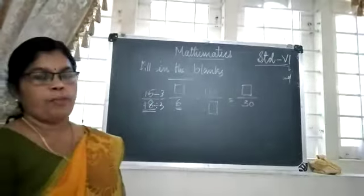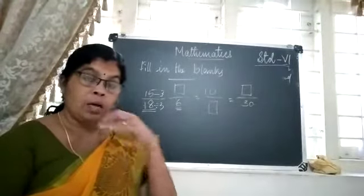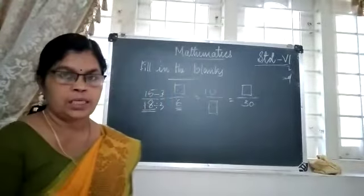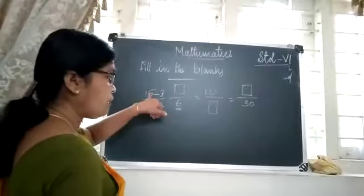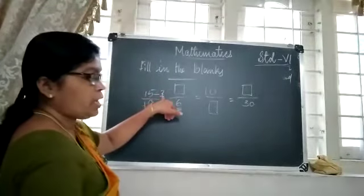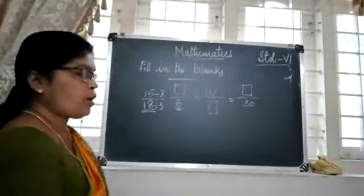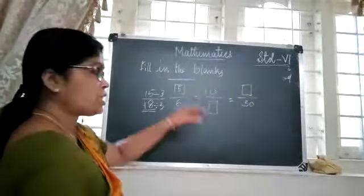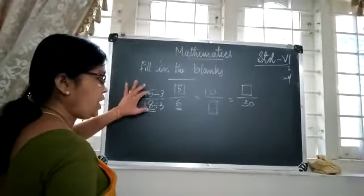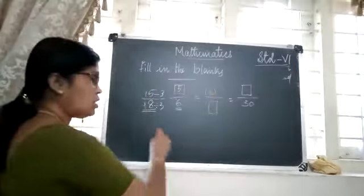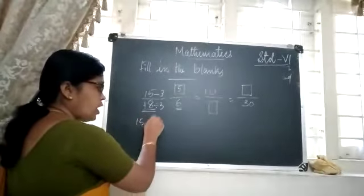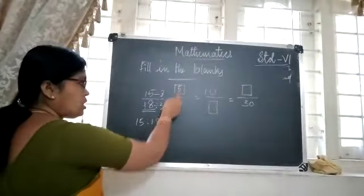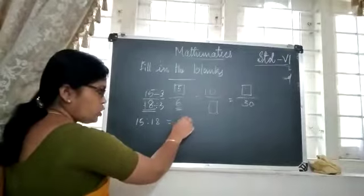If we multiply, we multiply the same number in numerator and denominator; if we divide, we divide the same number in both. So let us divide: 15 divided by 3 — in 15 how many 3's are there? Five 3's are 15. So we get the numerator 5. Therefore 5 by 6. So 15 is to 18 is equal to 5 is to 6.